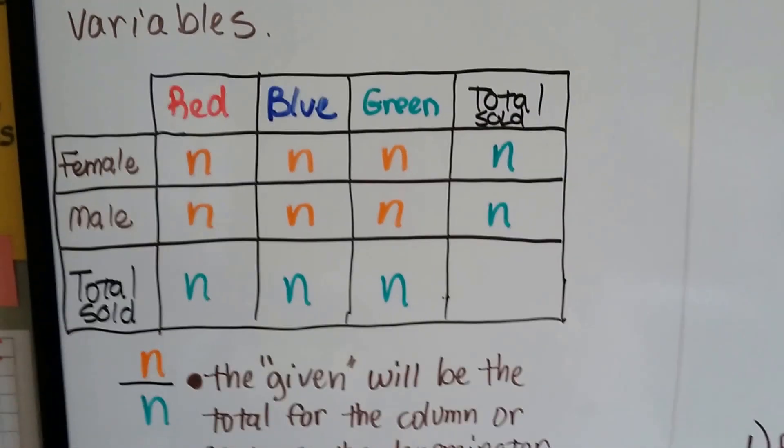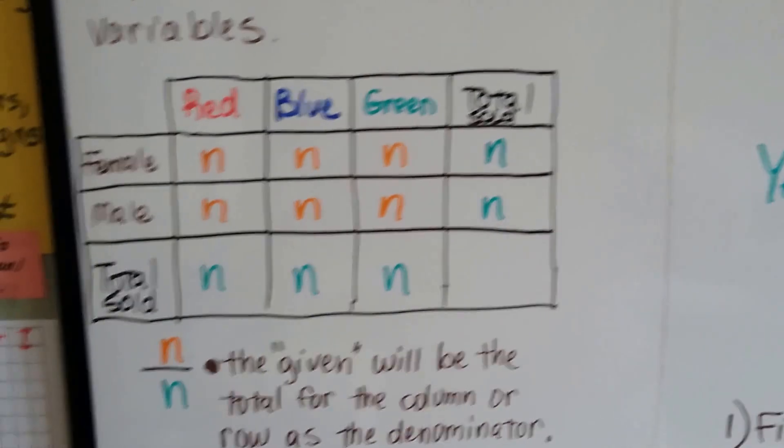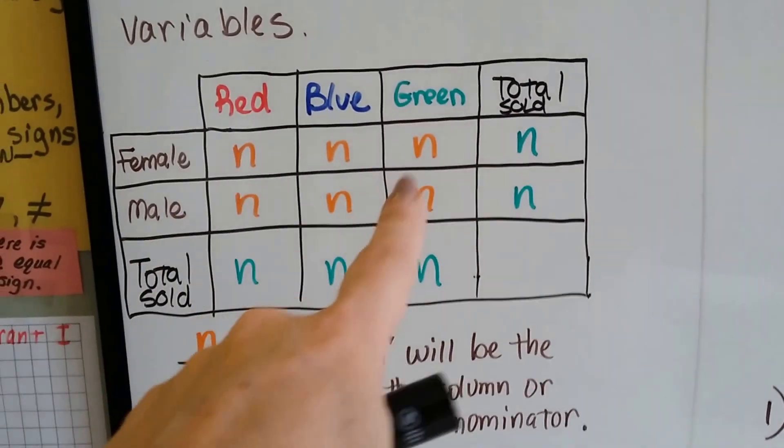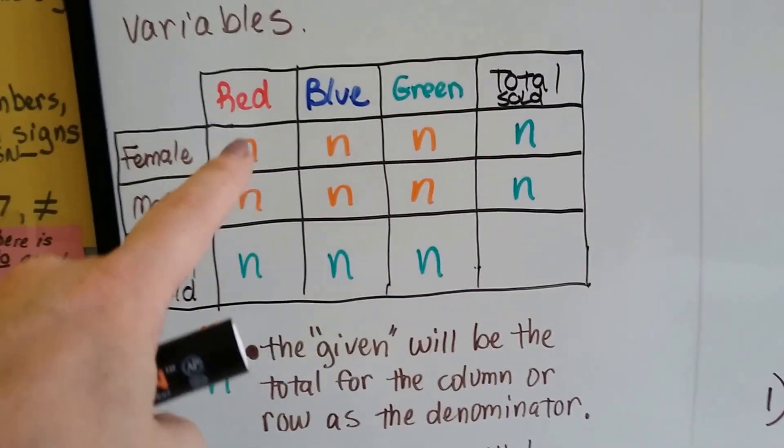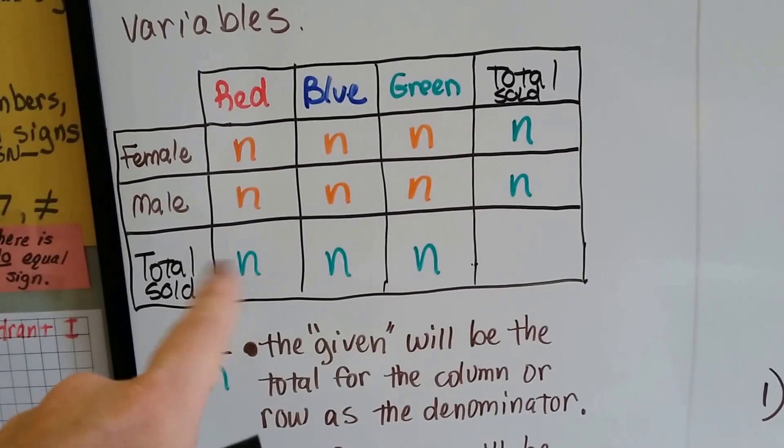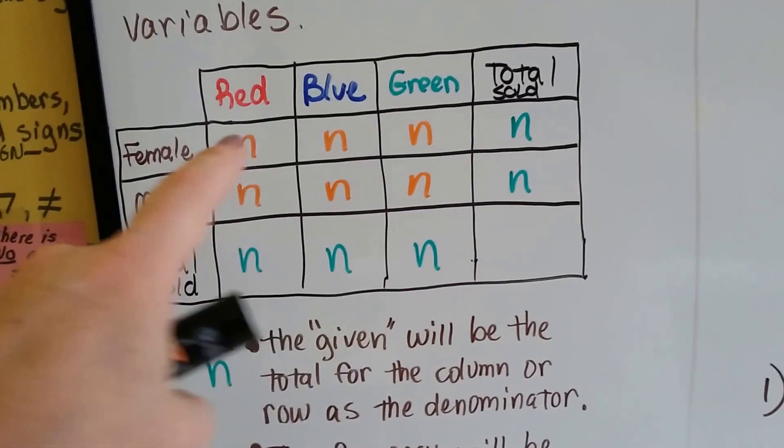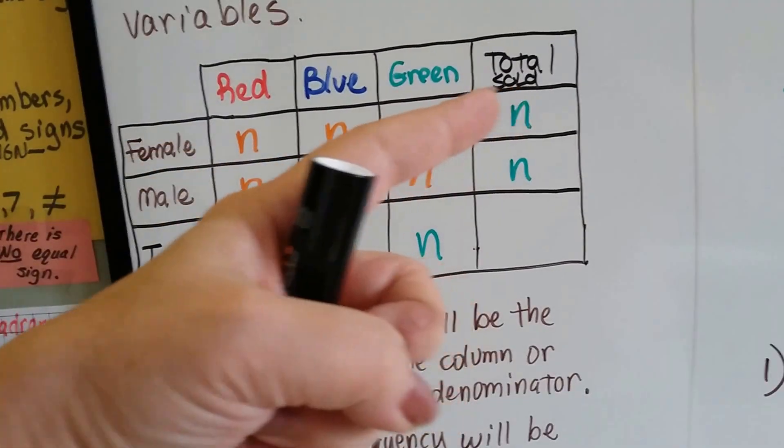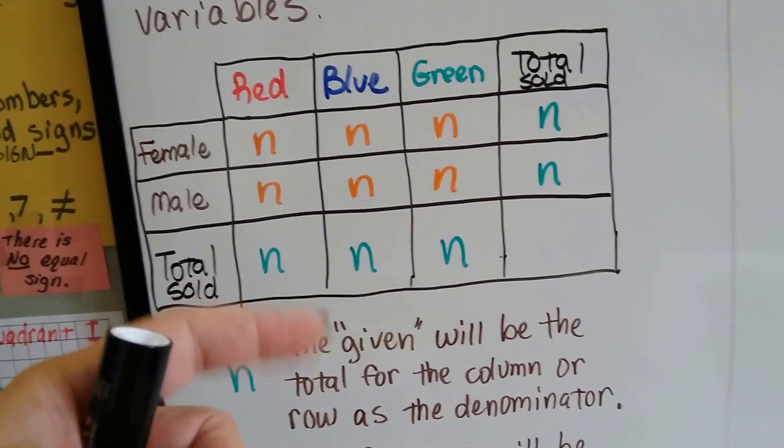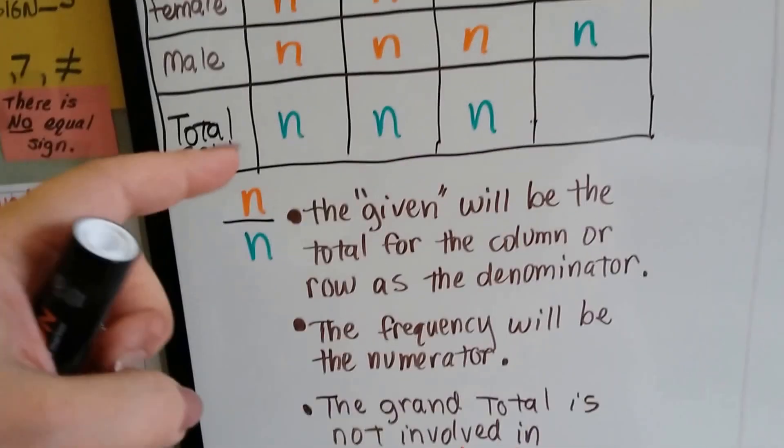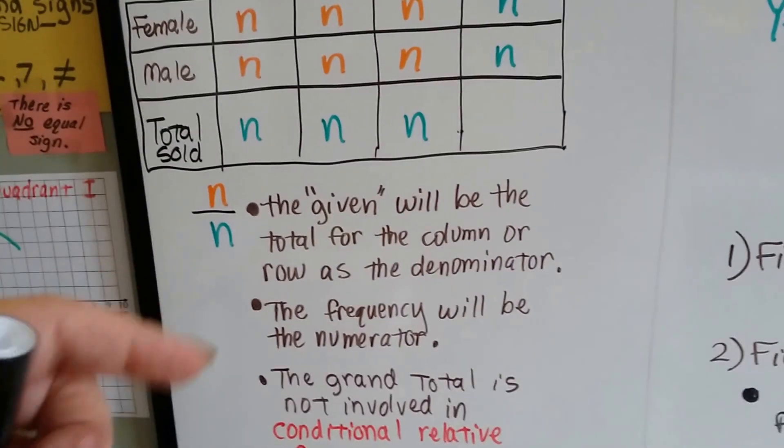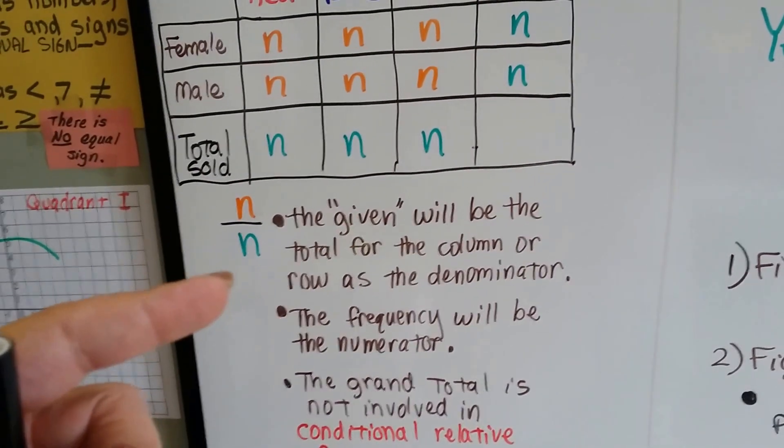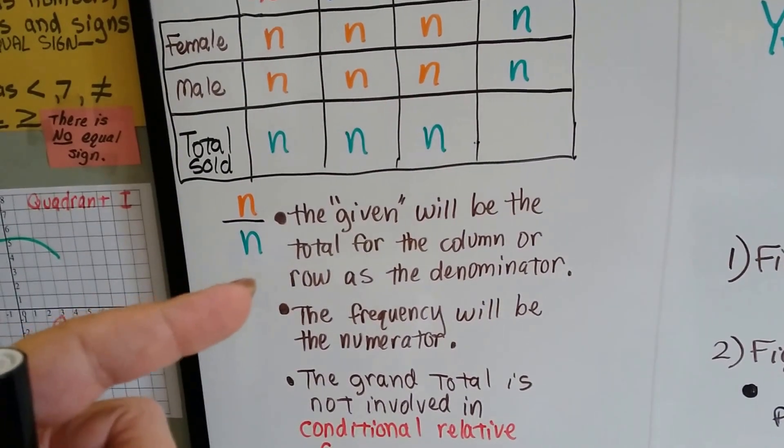So if you remember, the way to find the conditional relative frequency is we take one of these orange values and we look down the row or column and we divide that number by the total or that number by its total for its column or row. The orange one over the green one.